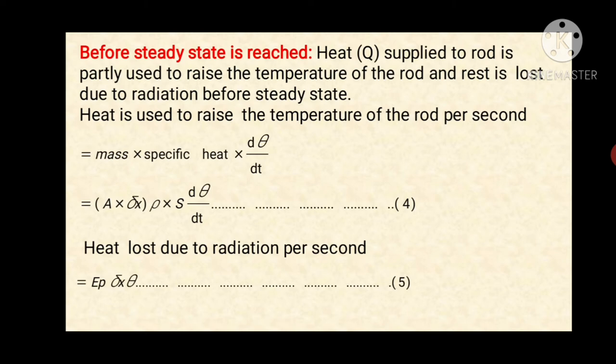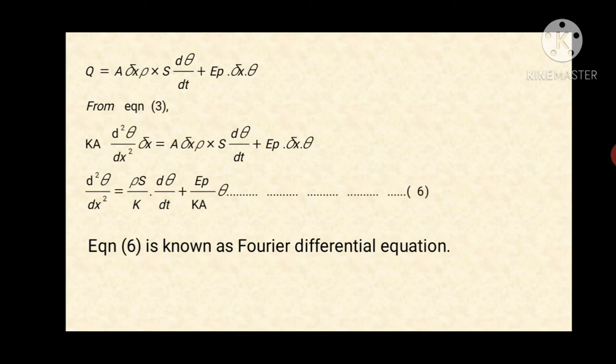The heat loss due to radiation per second is equal to e·p·Δx·θ, where e is the emissive power of the material and p is the perimeter of the rod. Now Q equals A·Δx·ρ·s·(dθ/dt) plus e·p·Δx·θ, combining equations four and five. The first part is heat used to raise the temperature and the second part is heat lost due to radiation.